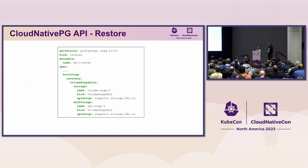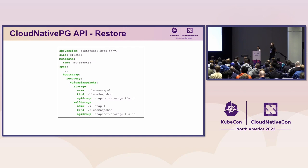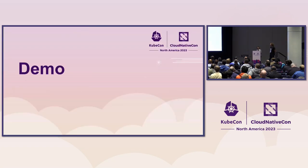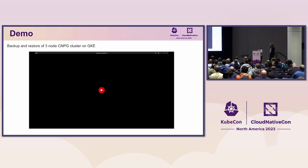In a disaster recovery scenario, if you need to restore that Postgres cluster, you create a new Cloud Native PG cluster object. Under the bootstrap and recovery section, that is where you specify the volume snapshots you want to restore this cluster from — you directly pass in the names of the Kubernetes volume snapshot objects you want to use. Let's go ahead and see this in action with a demo.